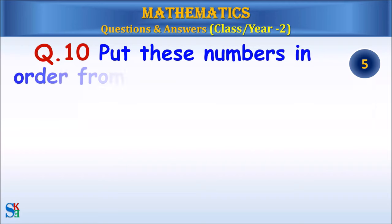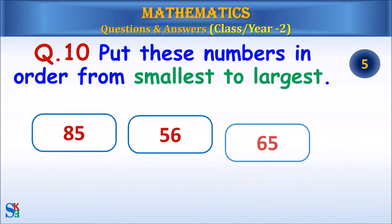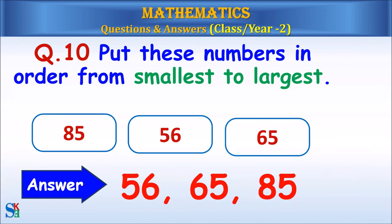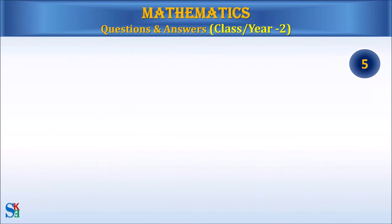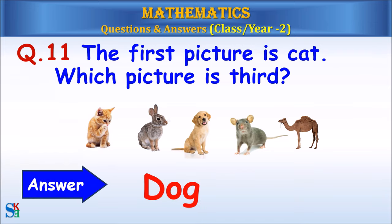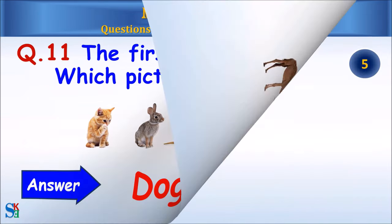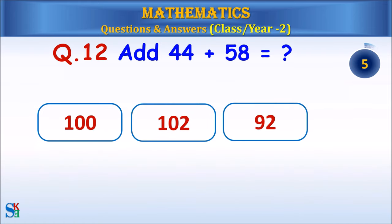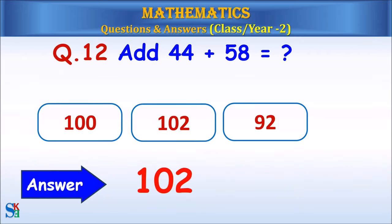Question 9: What shape comes next in given pattern? Answer: Triangle. Question 10: Put these numbers in order from smallest to largest. Answer: 56, 65, 85. Question 11: The first picture is cat. Which picture is third? Answer: Dog.